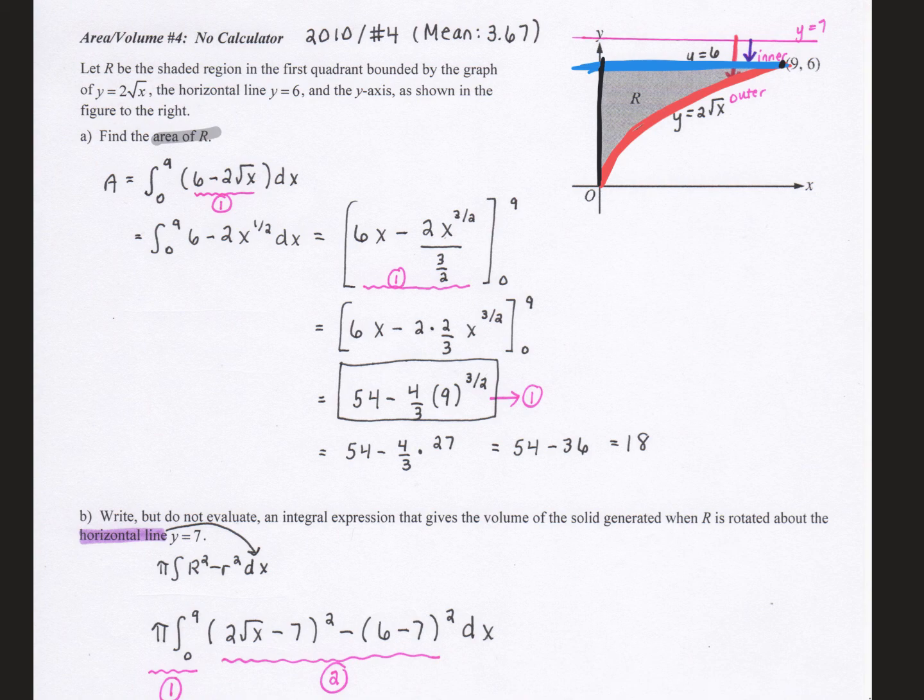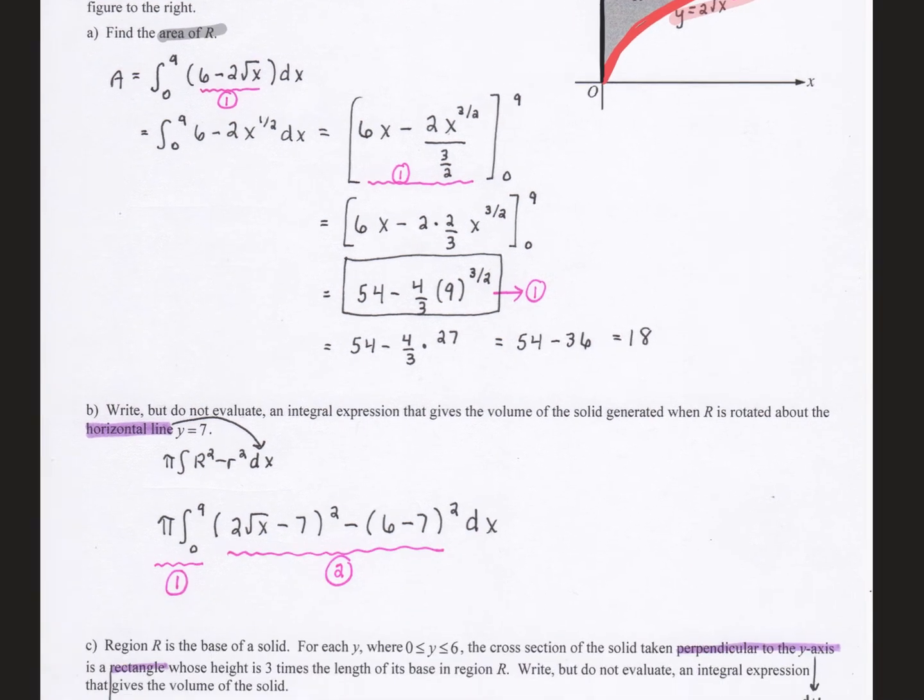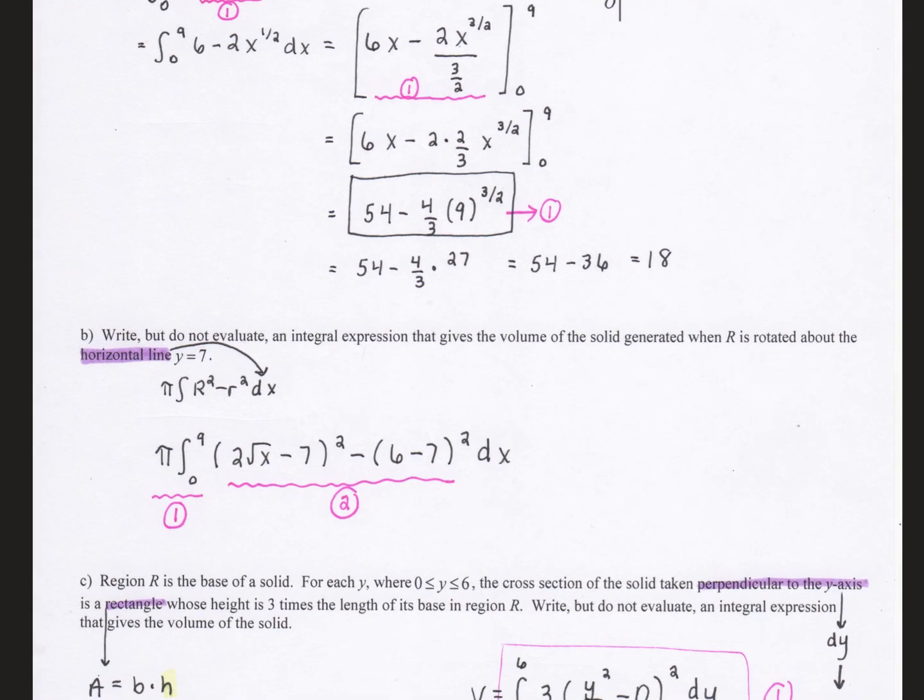Inner and outer is found by just starting at your axis of rotation. Whoever is closer, in this case y equals 6, will be your inner function. And whoever is further away, which in this case is the y equals 2 square root of x, will be your outer function. Putting that all together gives me pi.